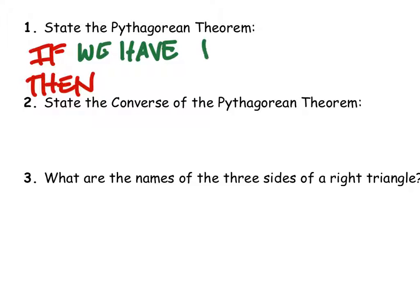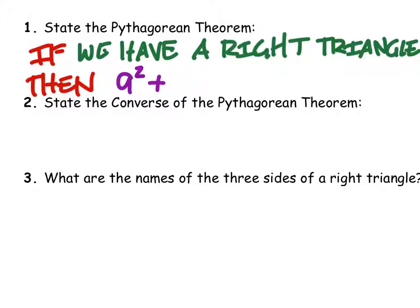If we have a right triangle, then a squared plus b squared equals c squared, where c is the hypotenuse.